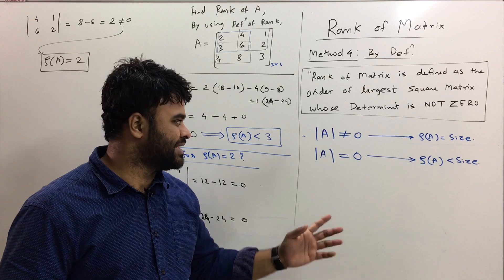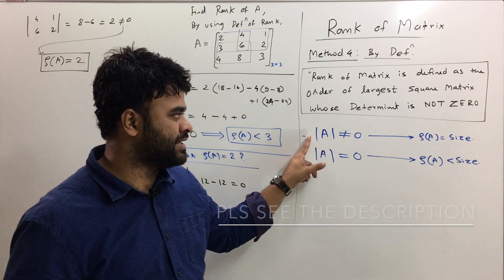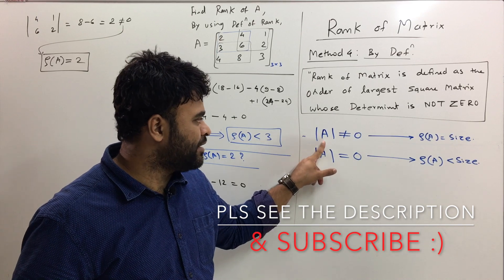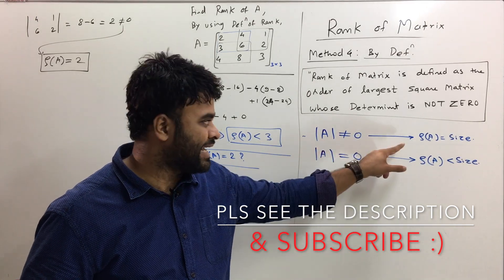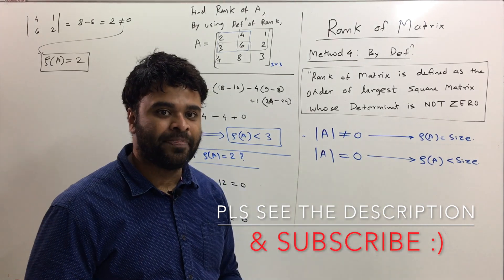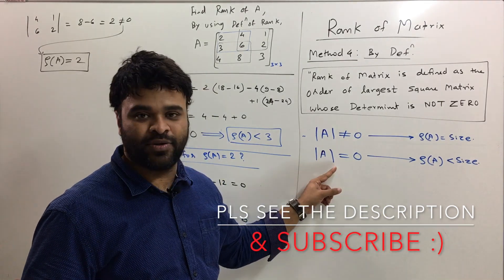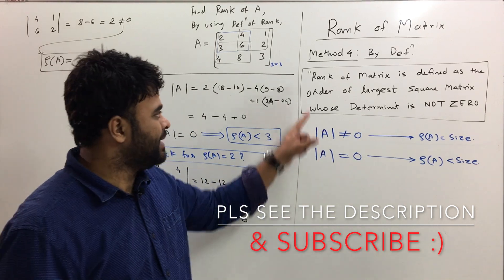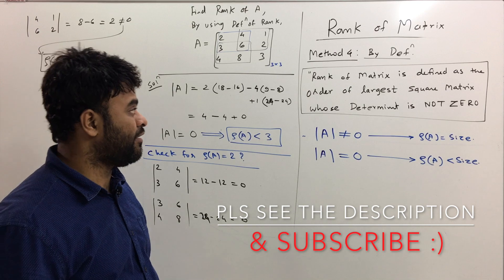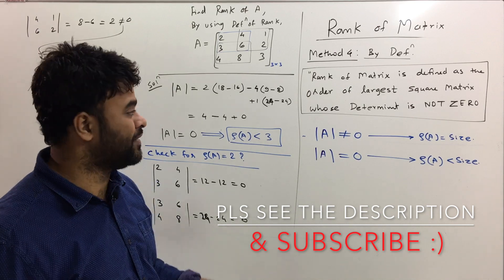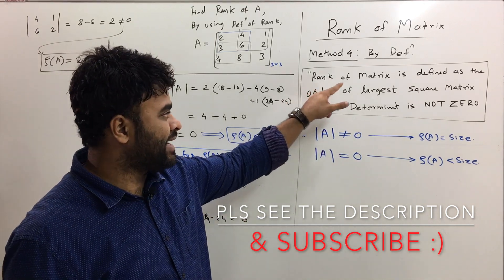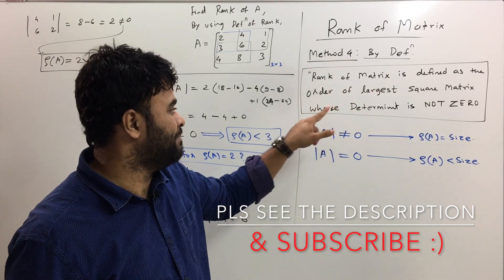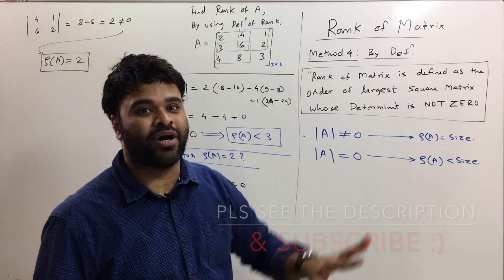To summarize: if the determinant of A is not equal to 0, the rank is the size of the matrix. If the determinant of A is equal to 0, the rank is less than the size. If all 2×2 sub-matrices had been 0, we would have moved to 1×1 sub-matrices. The formal definition of rank: the rank of a matrix is the order of the largest square sub-matrix whose determinant is not 0.